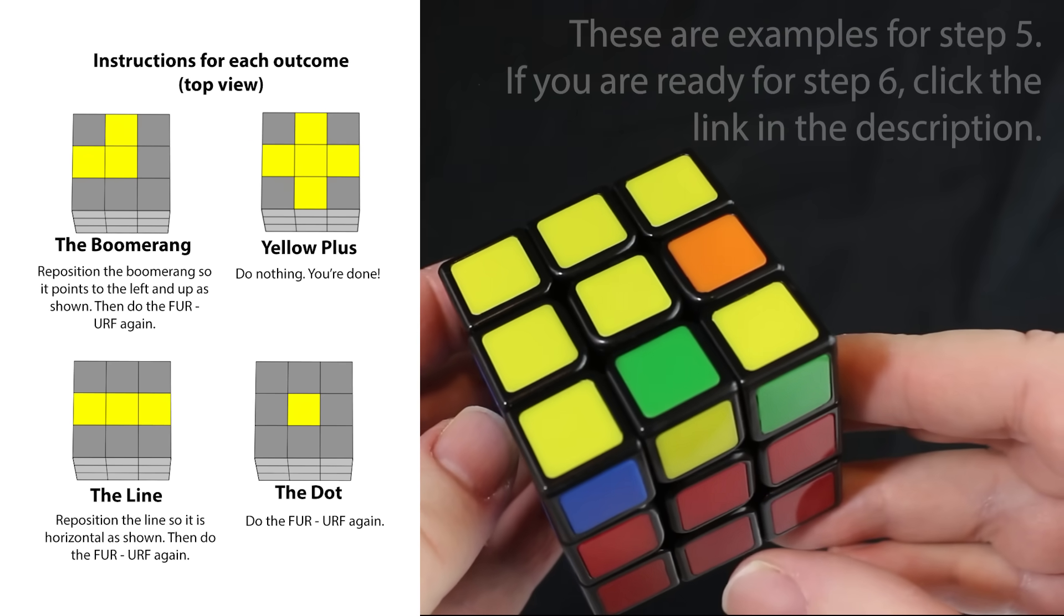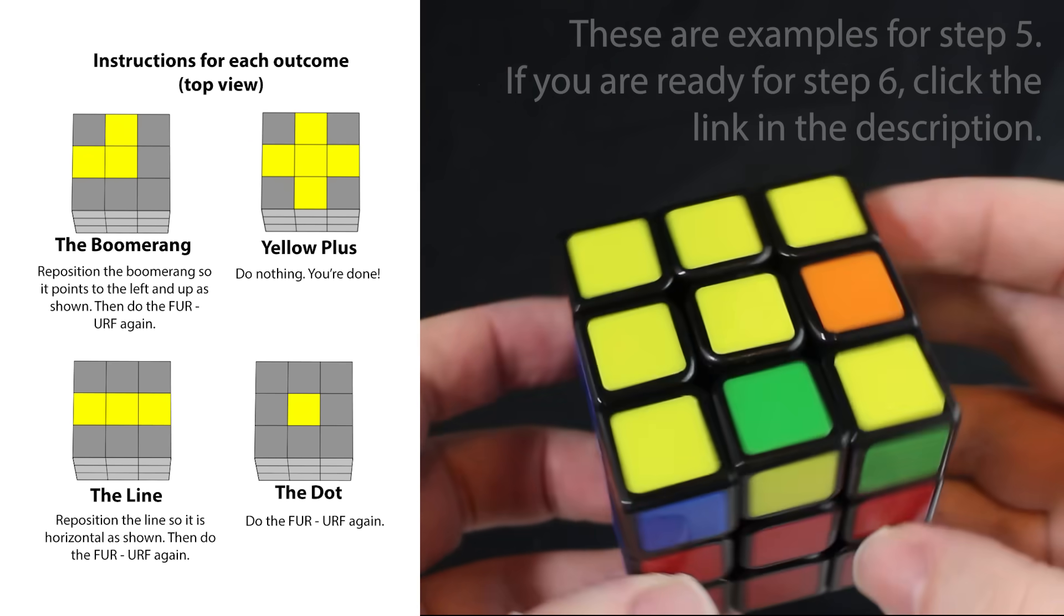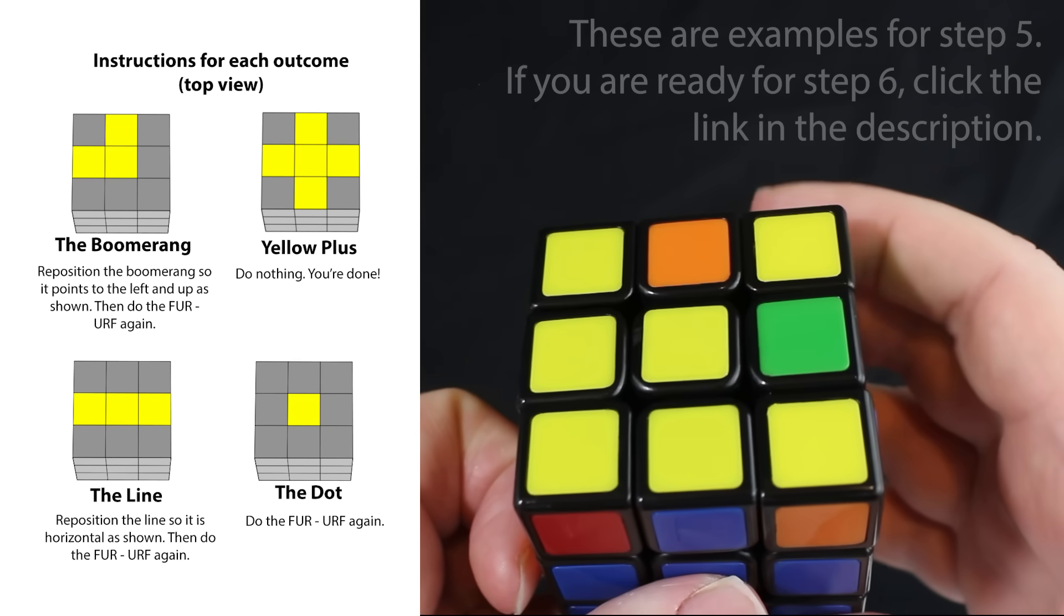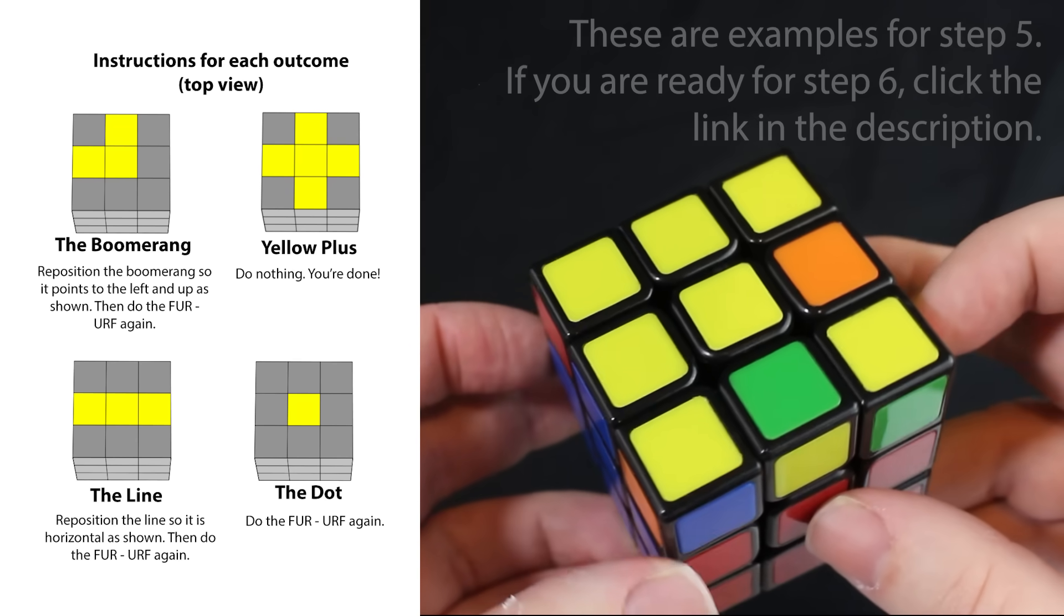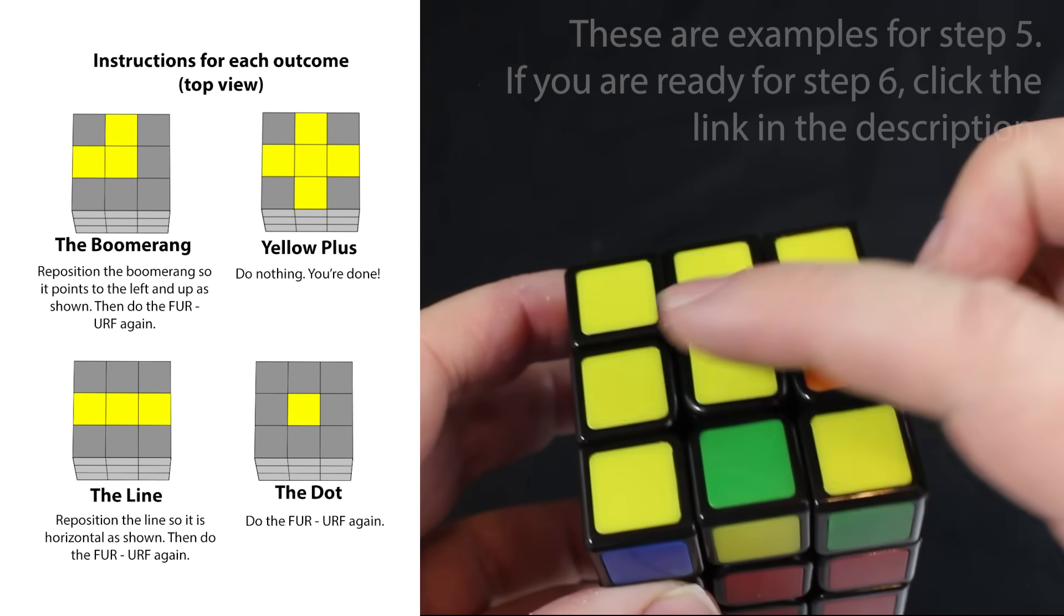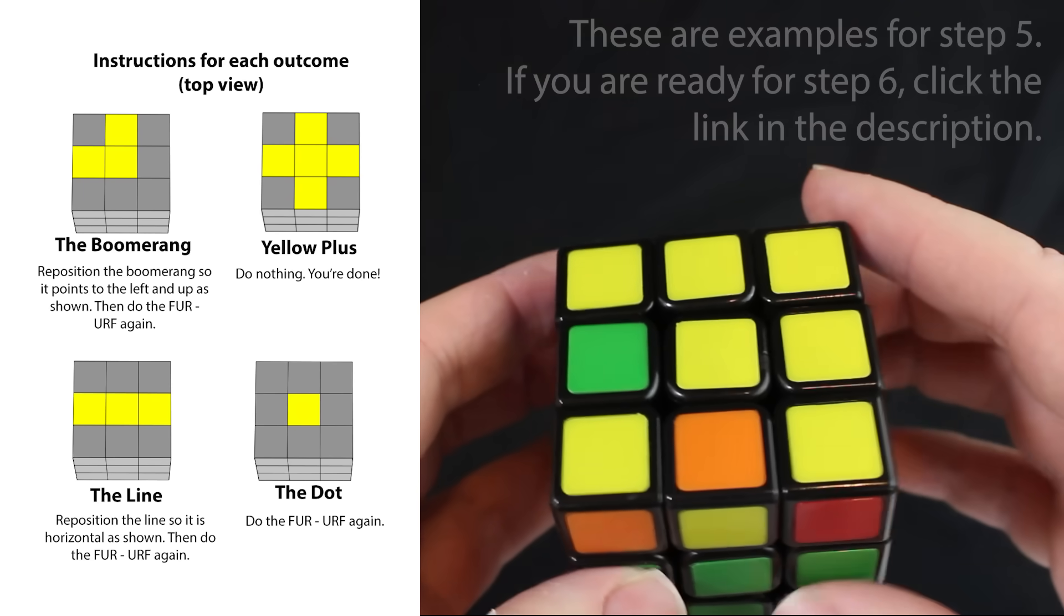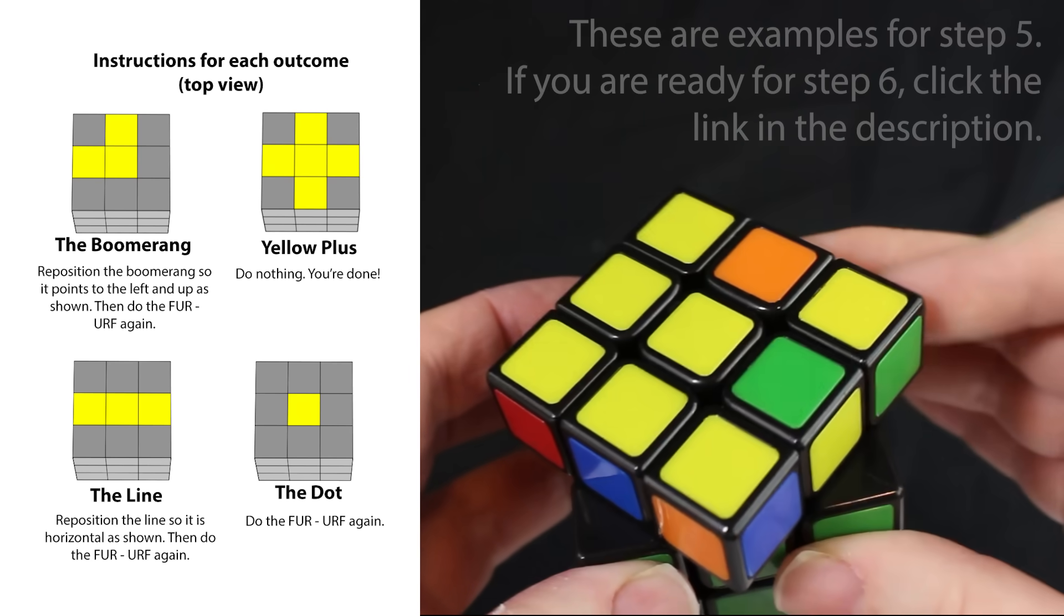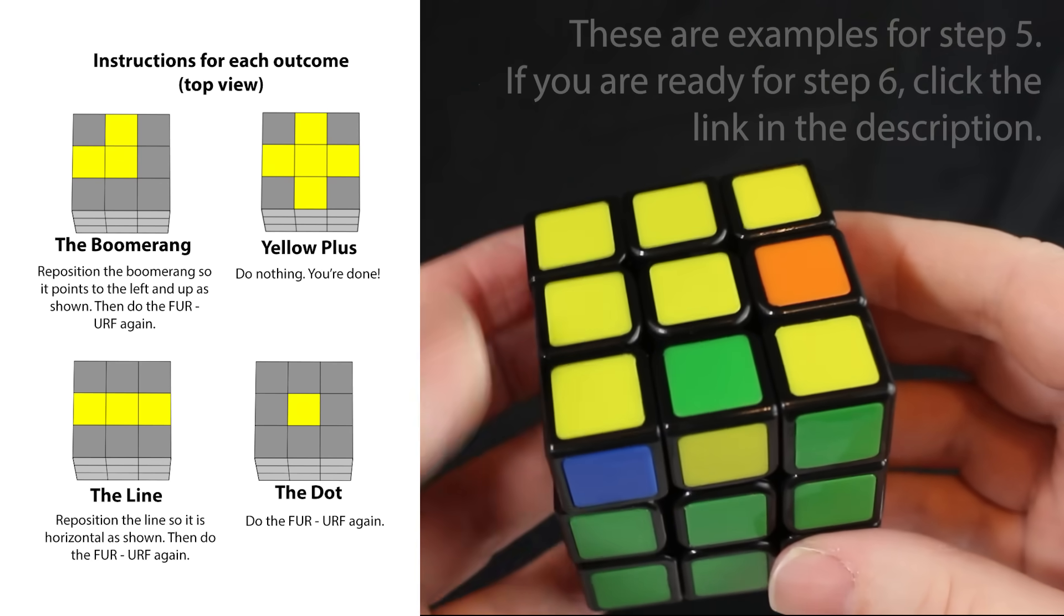So we scrambled the cube again, and we're in this scenario. So what should we do here? Do you know? What do we see in the graphics? Which one matches? It is the boomerang. It's right there. So when we see the boomerang, what do we do? We turn it until it's pointing top left, just like that, just like in the image. And then we do those moves.